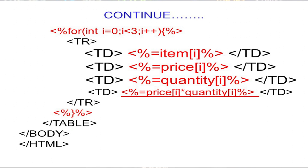We have four table data (td) cells for each row, corresponding to the four headings. The first td displays item[i], the second displays price[i], the third displays quantity[i], and the fourth calculates and displays the total: price[i] * quantity[i]. For the first iteration (i=0), this gives 19.99 × 2 = 39.98, displayed in the fourth column.